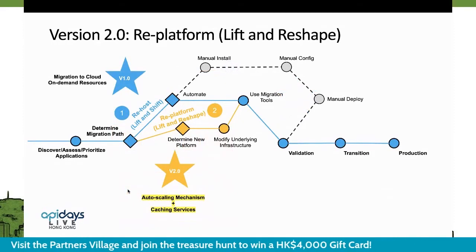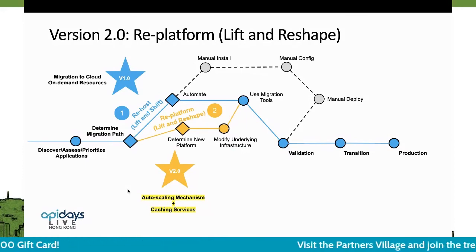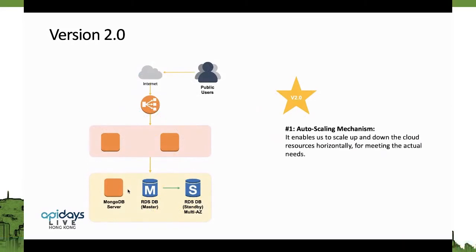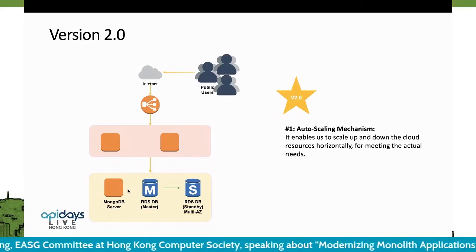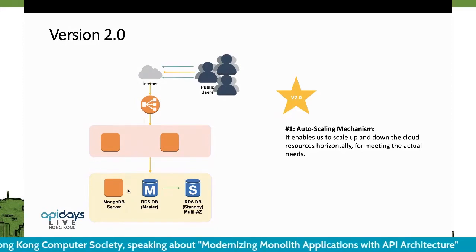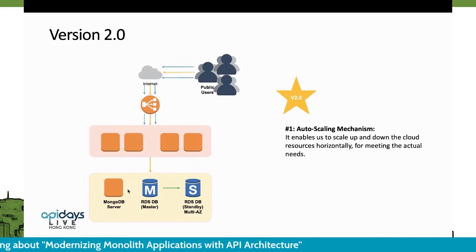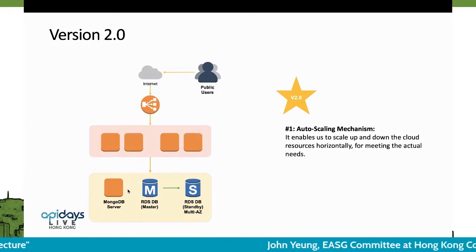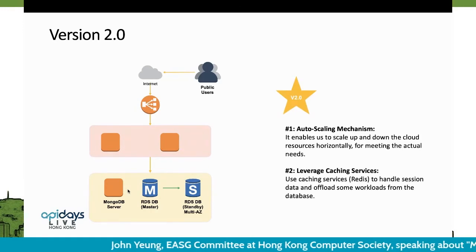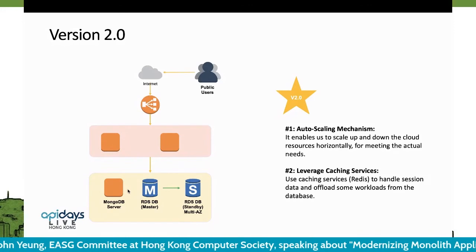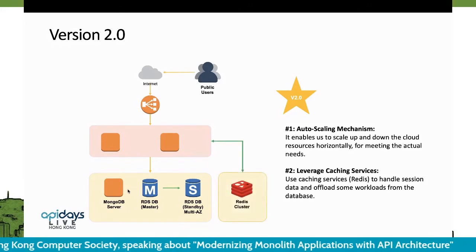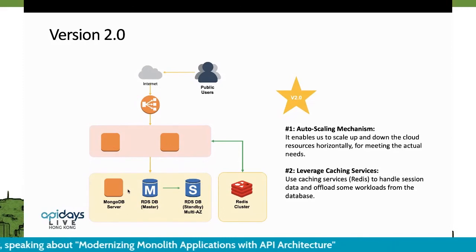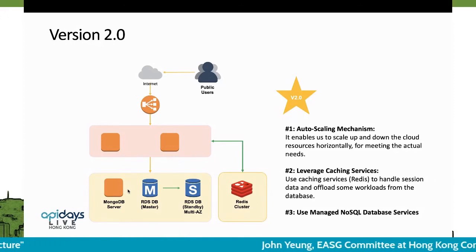For the second stage, we introduce an auto-scaling mechanism and also caching services to improve the current architecture and performance. When more people use the mobile app and more traffic comes in to the load balancer, we trigger the mechanism to scale out to have more instances running at the same time. When traffic returns to normal, we minimize the number of instances. For the database layer, we offload the database bottleneck by using a caching service like Redis. We also repurpose to use a managed NoSQL database to keep transaction nodes.